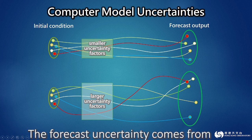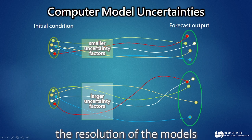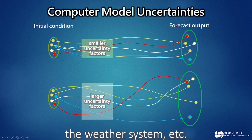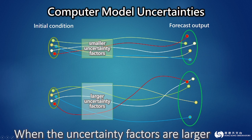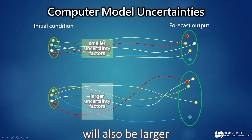The forecast uncertainty comes from the errors of the observation data, the resolution of the models, the characteristics of the weather system, and other factors. When the uncertainty factors are larger, the discrepancies of forecast results will also be larger.